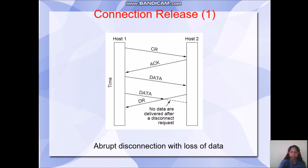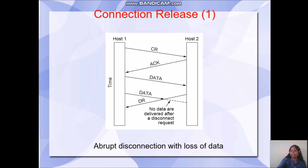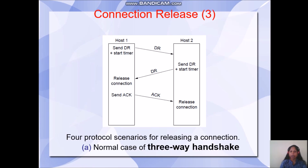Now, connection release. A disconnect request is sent from host2 at a certain time interval. At this point, the connection between host2 and host1 is closed, and any data received after this time interval won't be received by host2. To deal with connection release, only if host1 and host2 come to a mutual agreement can they disconnect. Otherwise, it can lead to abrupt disconnection and loss of data. Connection release should be designed in such a way to avoid any data loss.